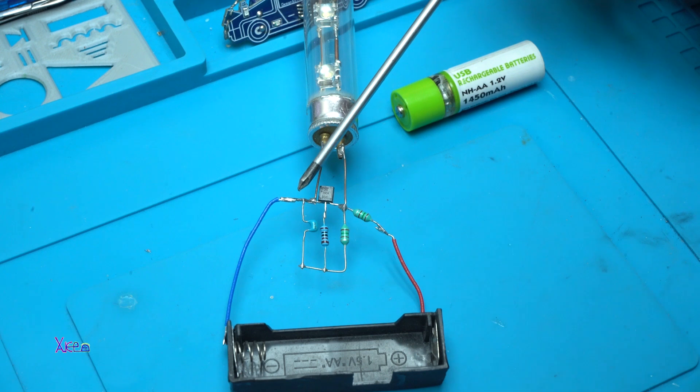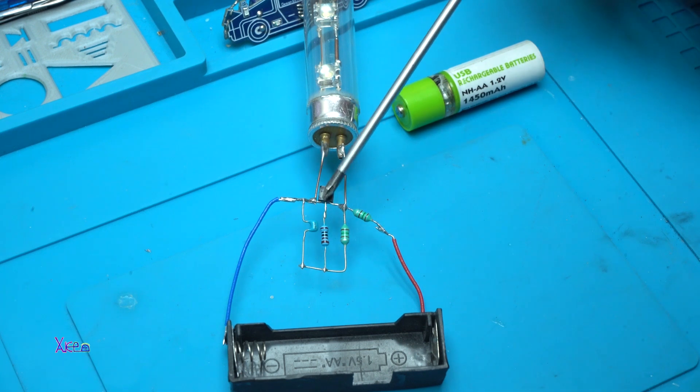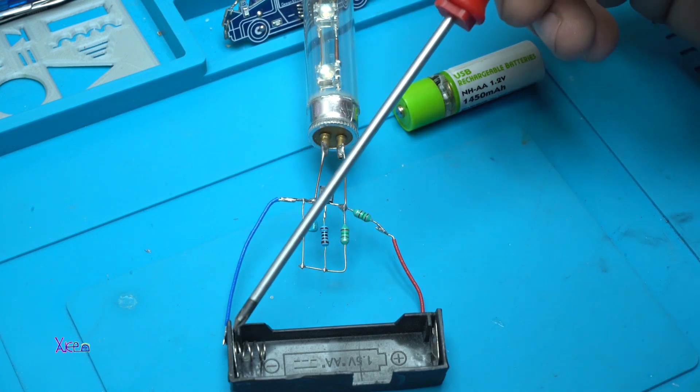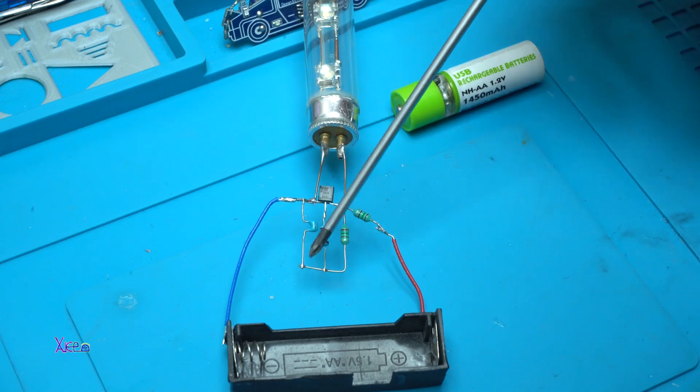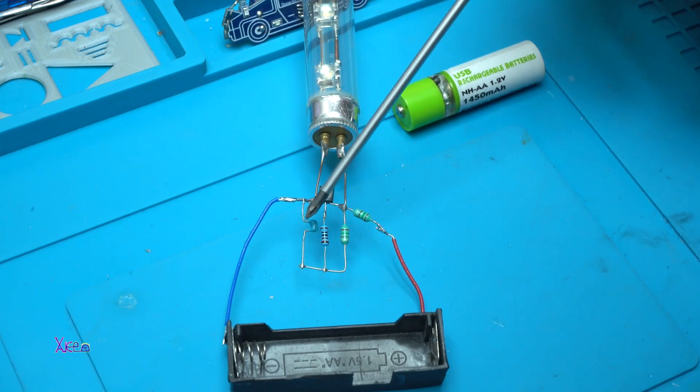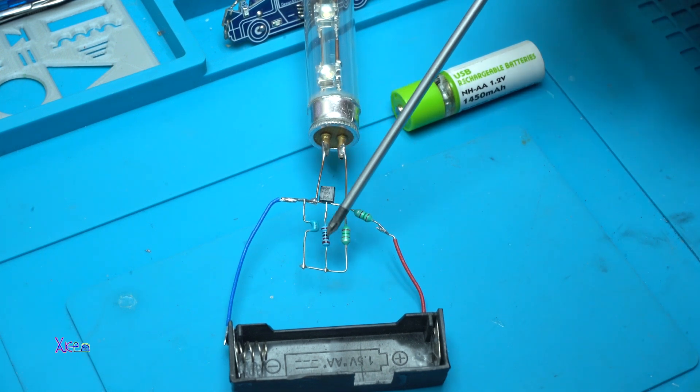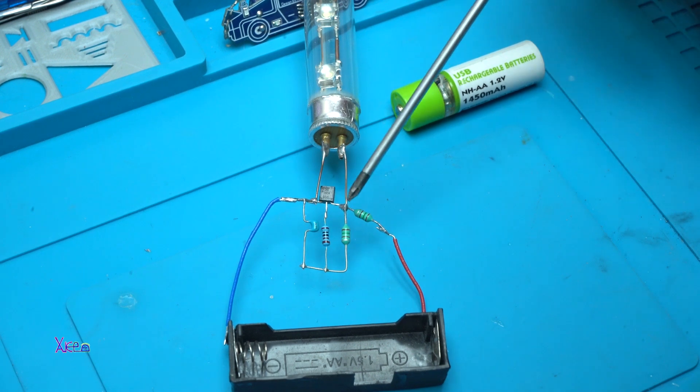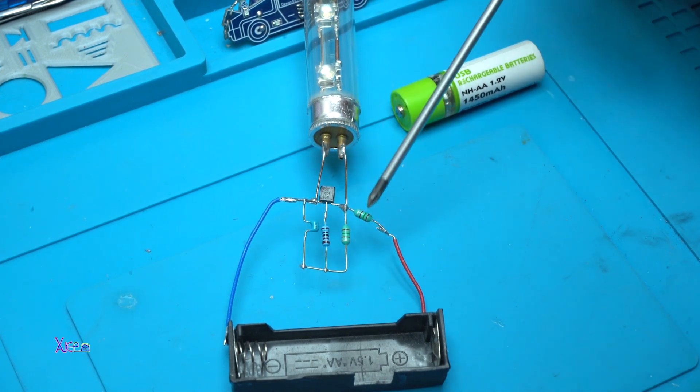From the left side we have an emitter, the middle leg is base, and from the right side is collector. The emitter directly is connected on the negative pole of the battery. Here we have one capacitor of 100 nanofarads, this resistor is 1 kilo ohm, and these two inductors are 150 milli-henries.